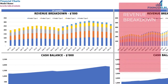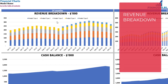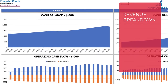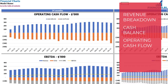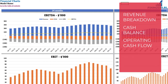On the financial charts tab you may see the main financial outputs in graphical form. On the left side you see charts for 24 months; on the right side, charts for five years or 60 months. The top charts show revenue breakdown by product types. The next charts show cash balance for two and five years. Following that, operating cash flow broken down by cash inflow and outflow. Then EBITDA breakdown — revenue, COGS, and OPEX — with the resulting EBITDA value shown as a yellow line by month. Finally, the last charts show EBIT value by month.